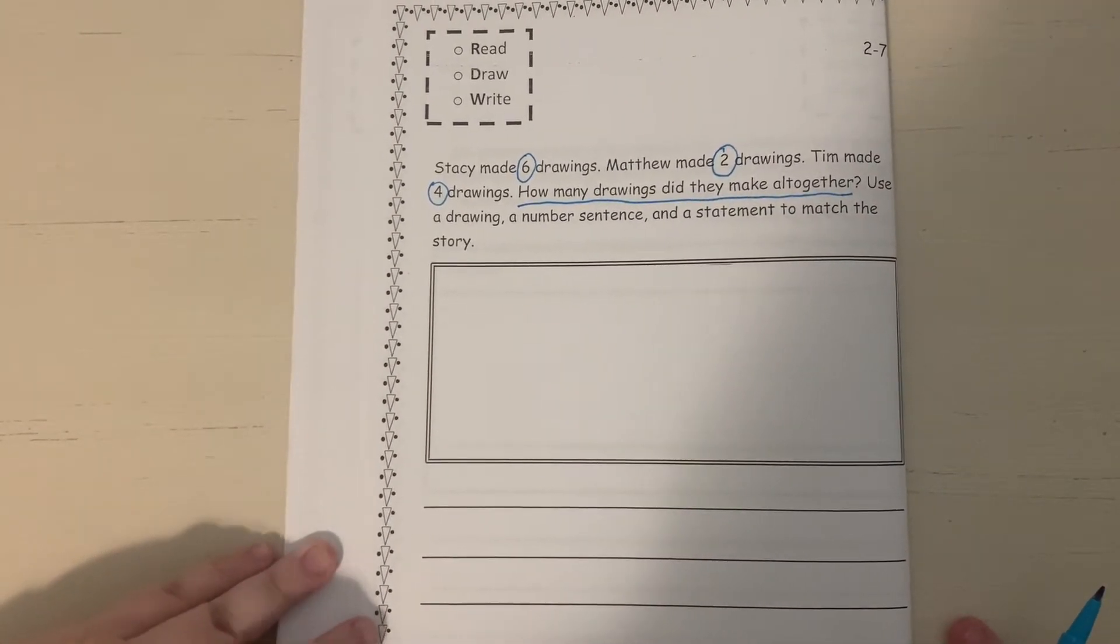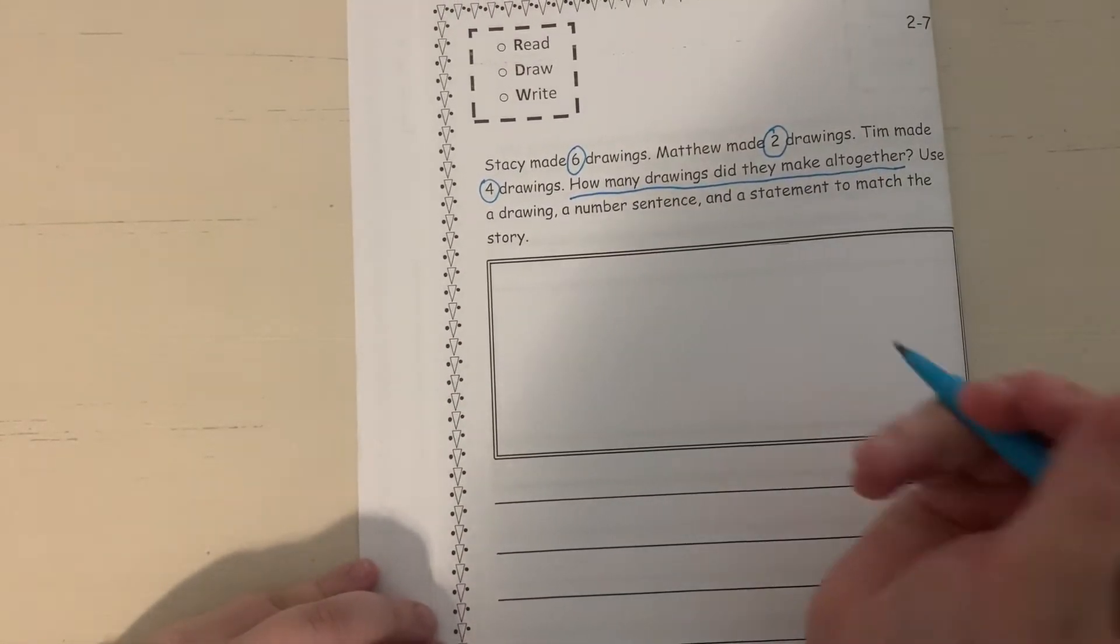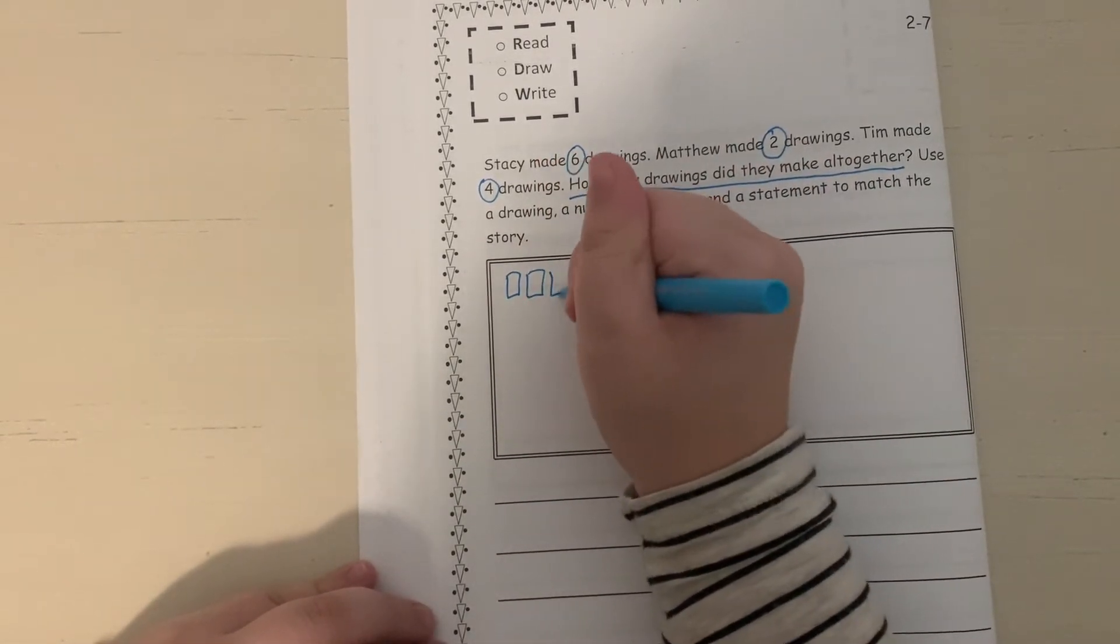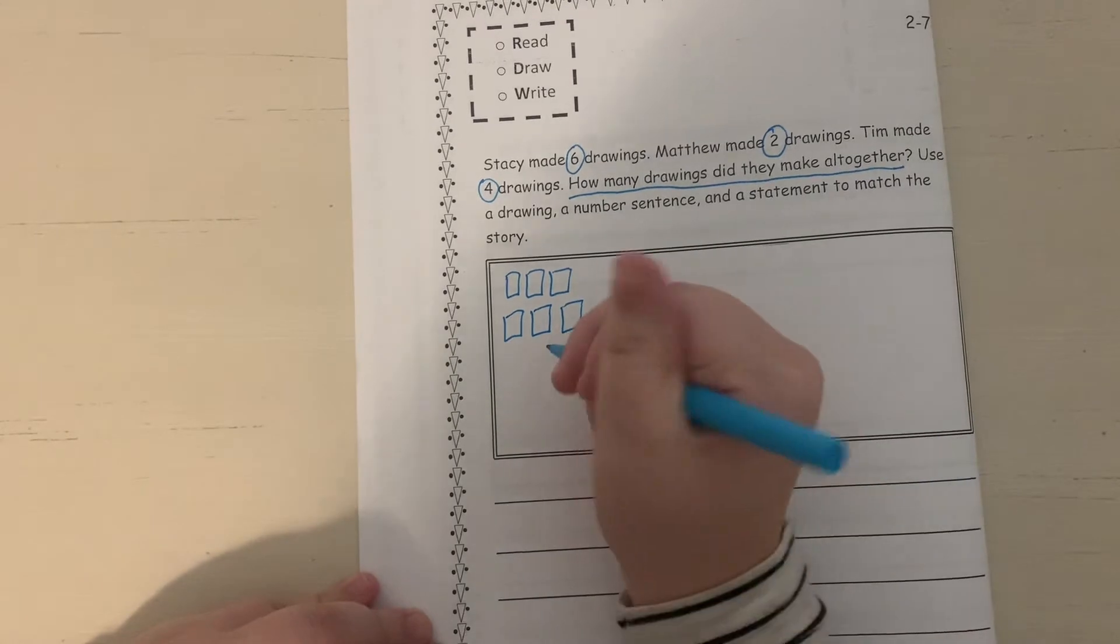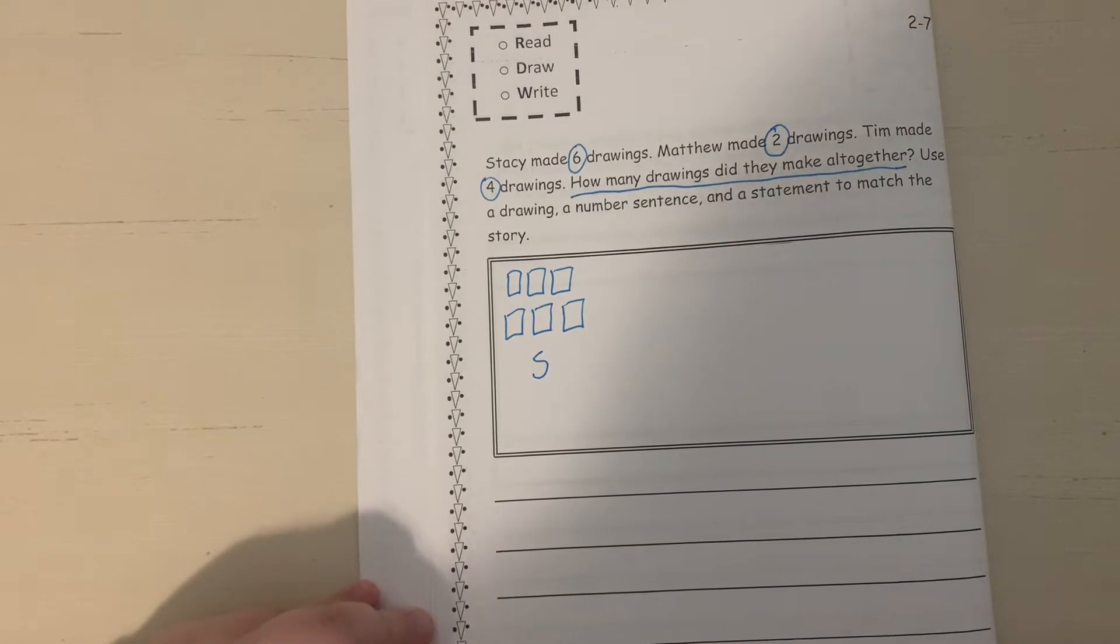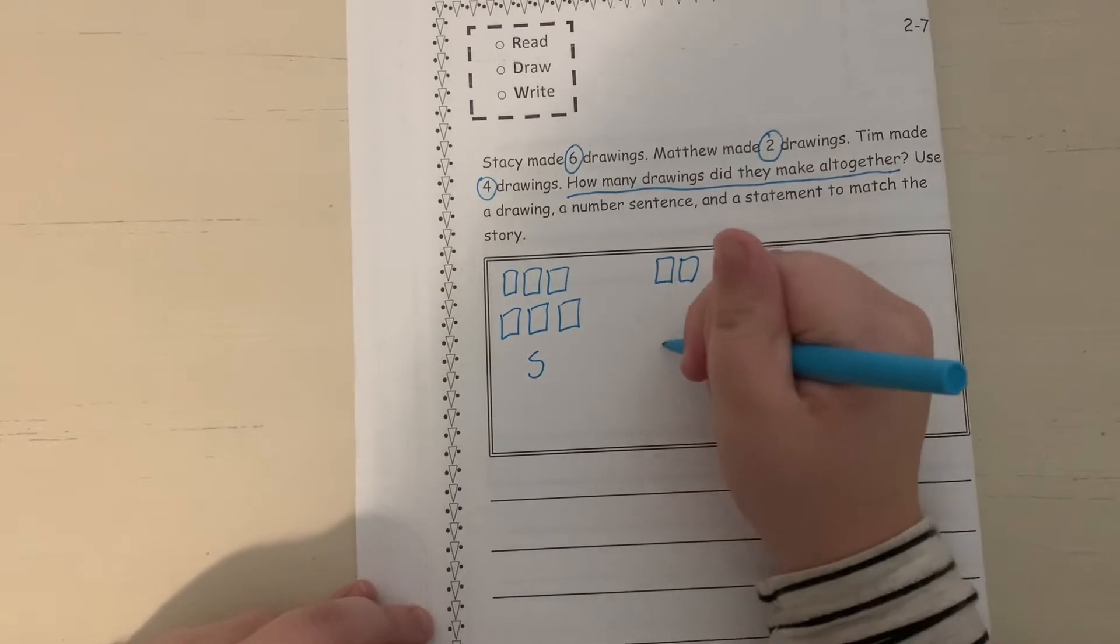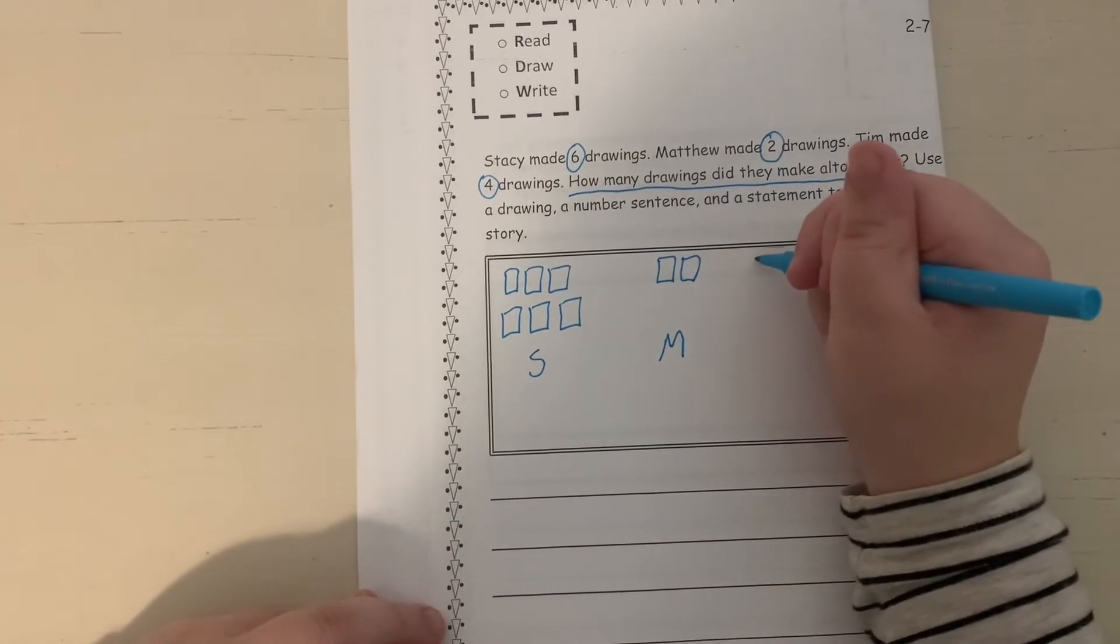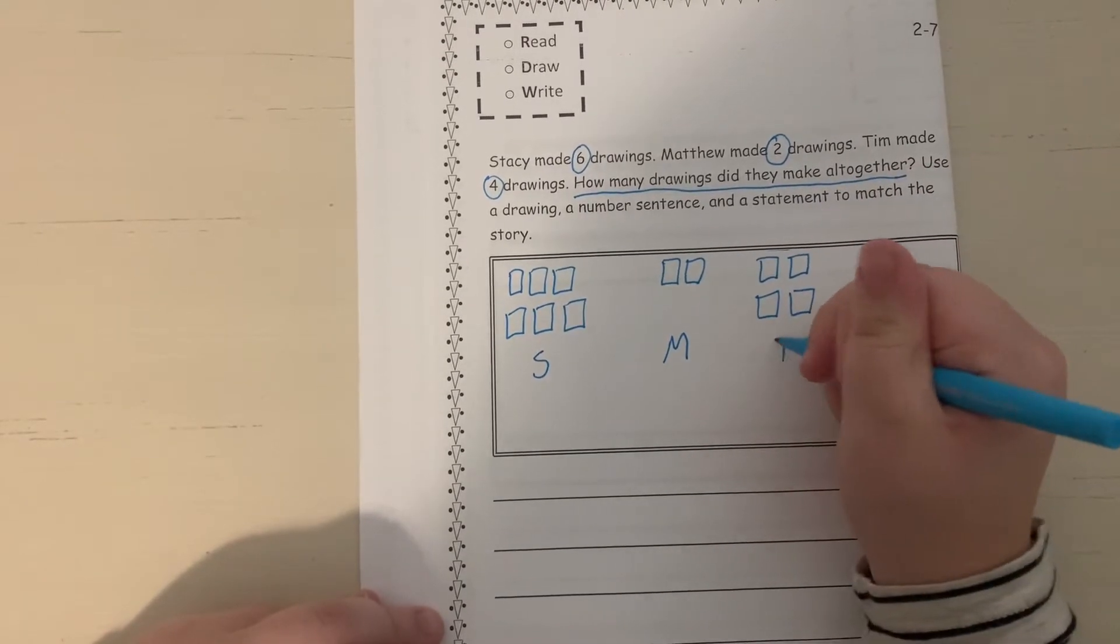So first we're going to make a drawing. Let's start with Stacy. Stacy made six drawings. So I'm going to draw blocks or squares. One, two, three, four, five, six. And I'm going to label that with an S for Stacy. Matthew made two drawings. So we'll draw Matthew's two right next to it. One, two, and an M for Matthew. Tim made four. So let's draw Tim's four. One, two, three, four. And a T for Tim.